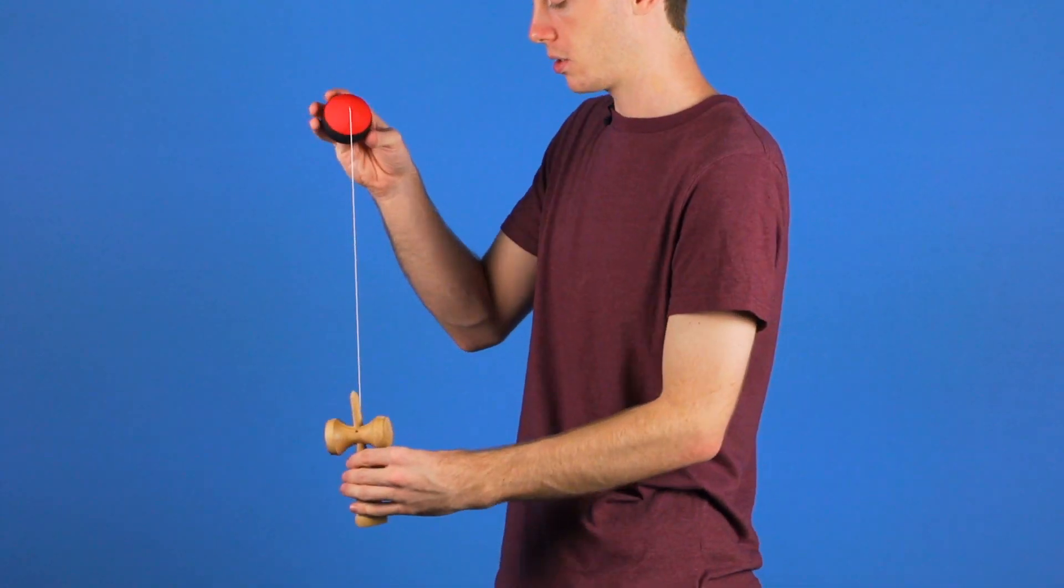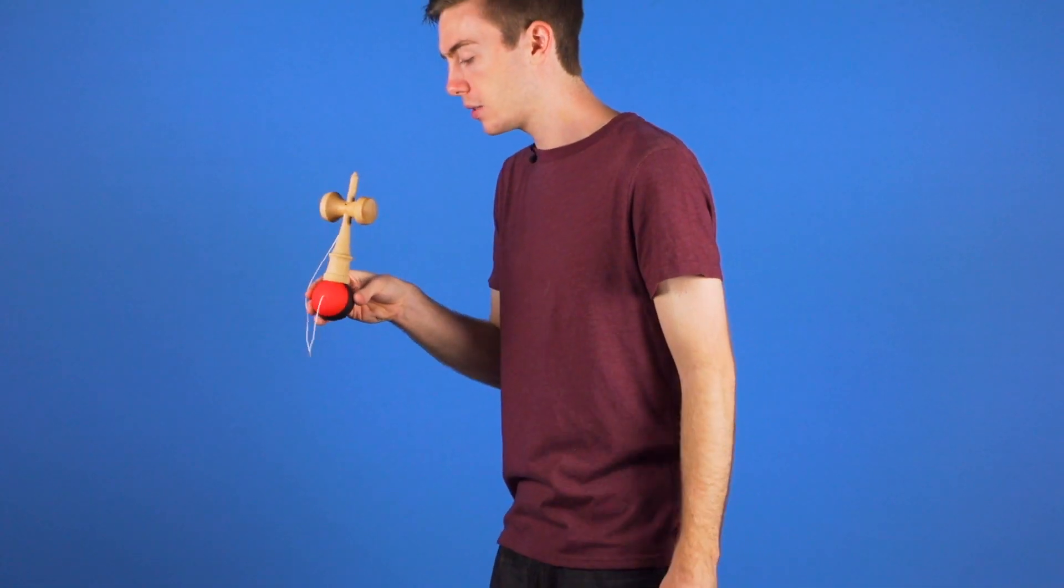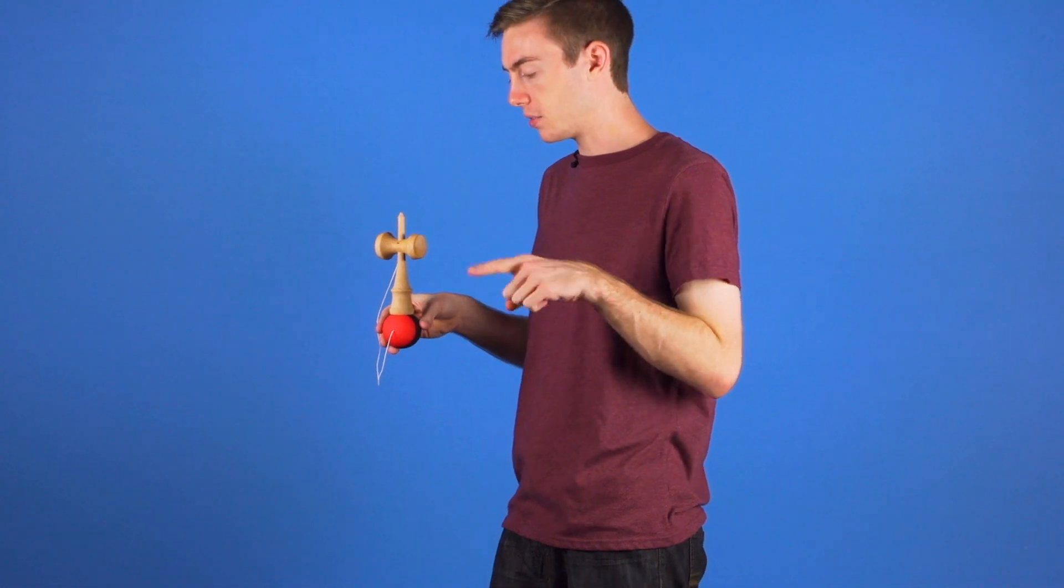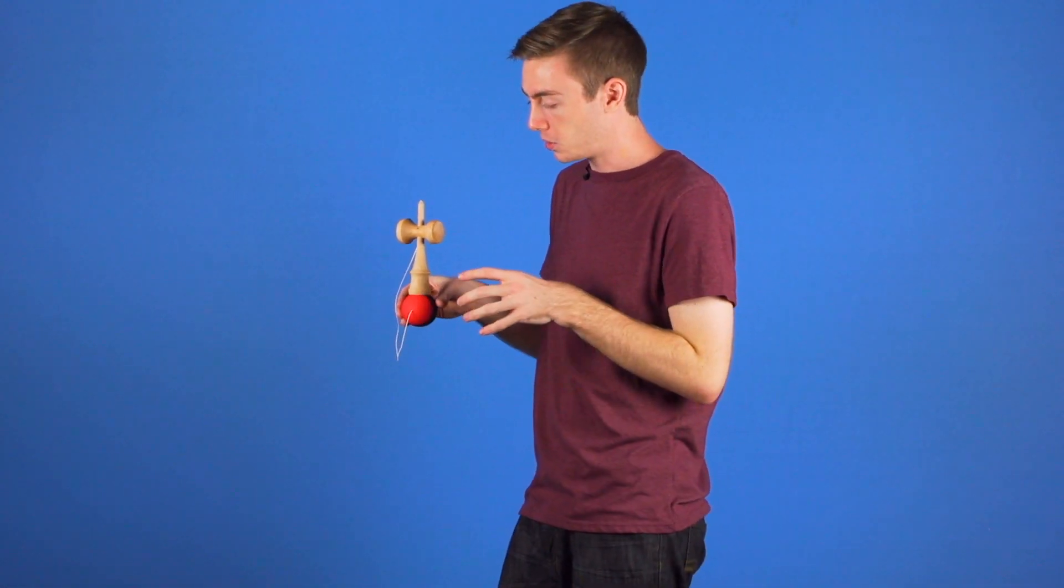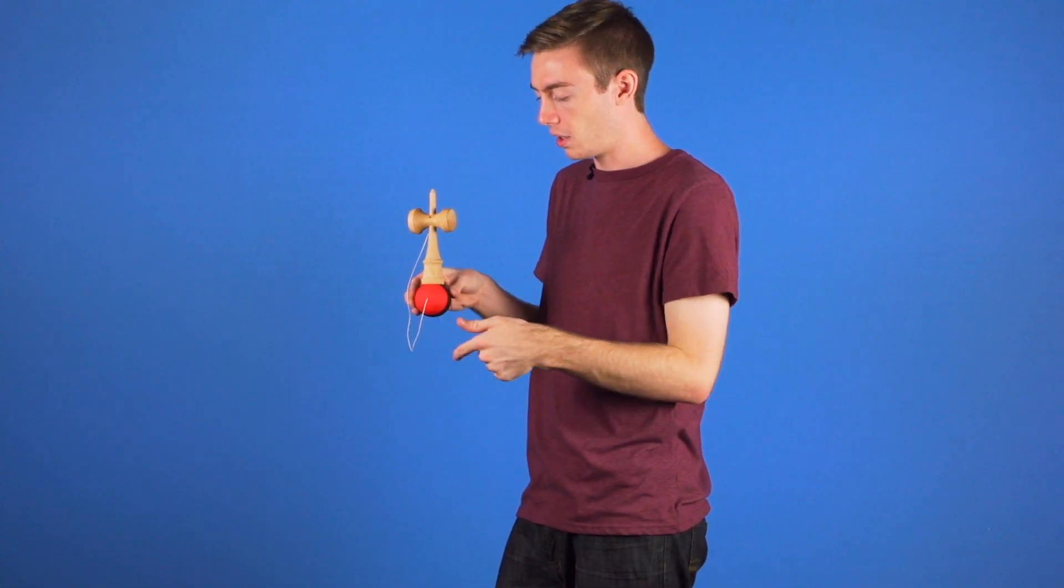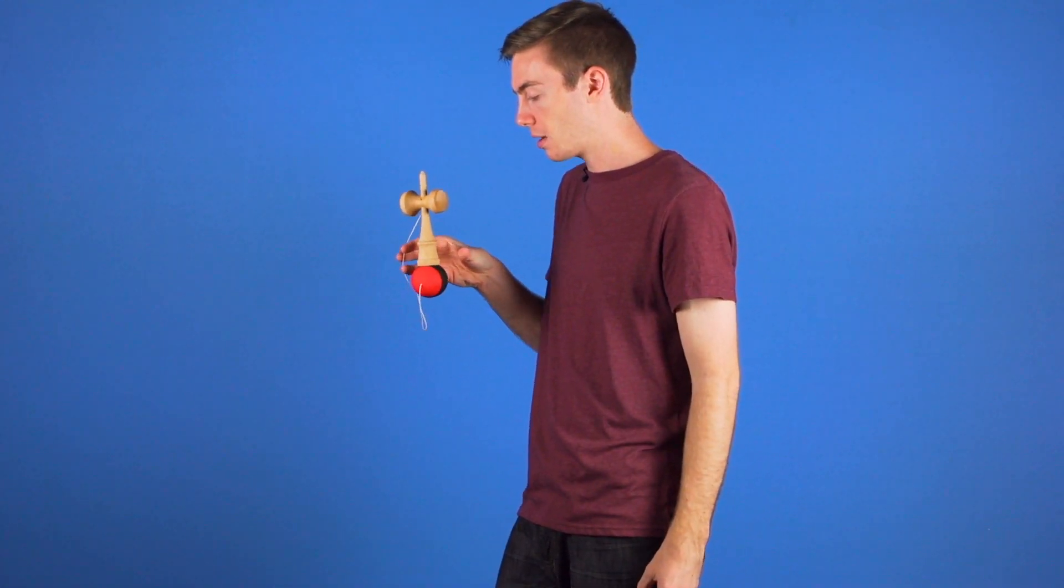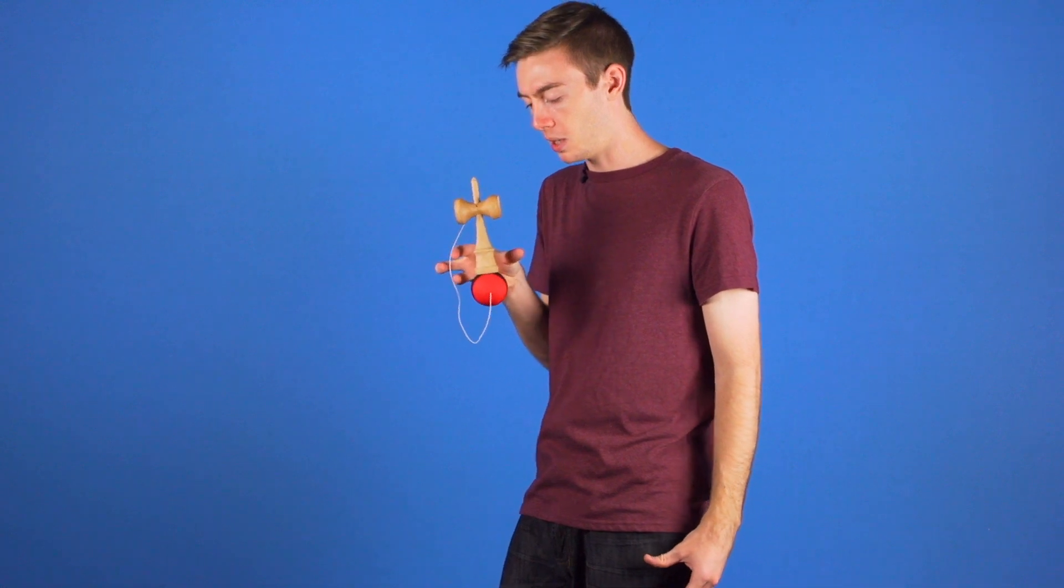When you have it in the lighthouse position, you can use your non-dominant hand for some special effects or aesthetic pleasure. You're simply going to let go of the other remainder of your fingers and let the ken balance on the Tama with just your pinky in there.